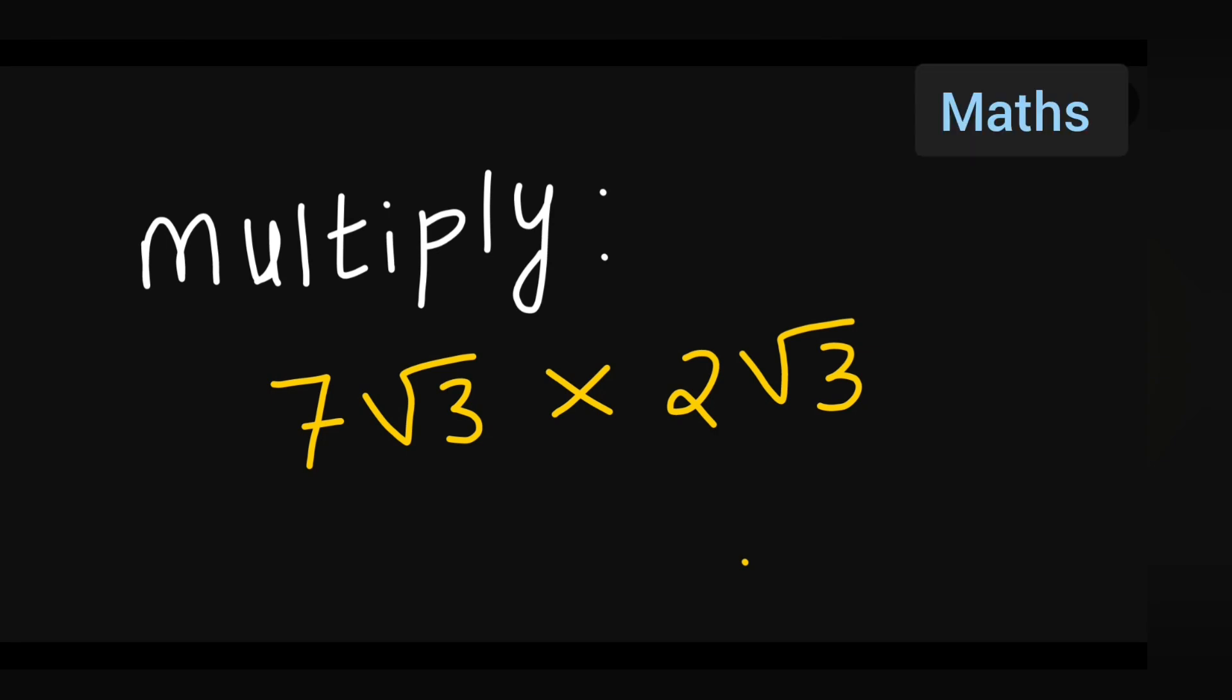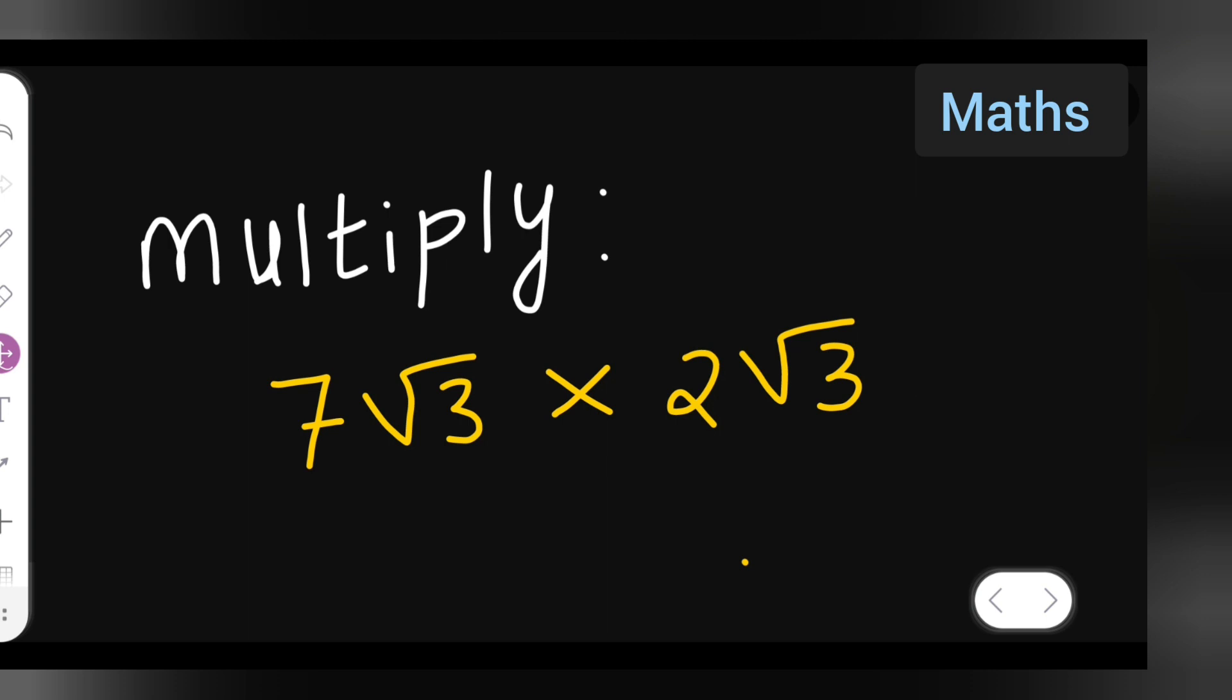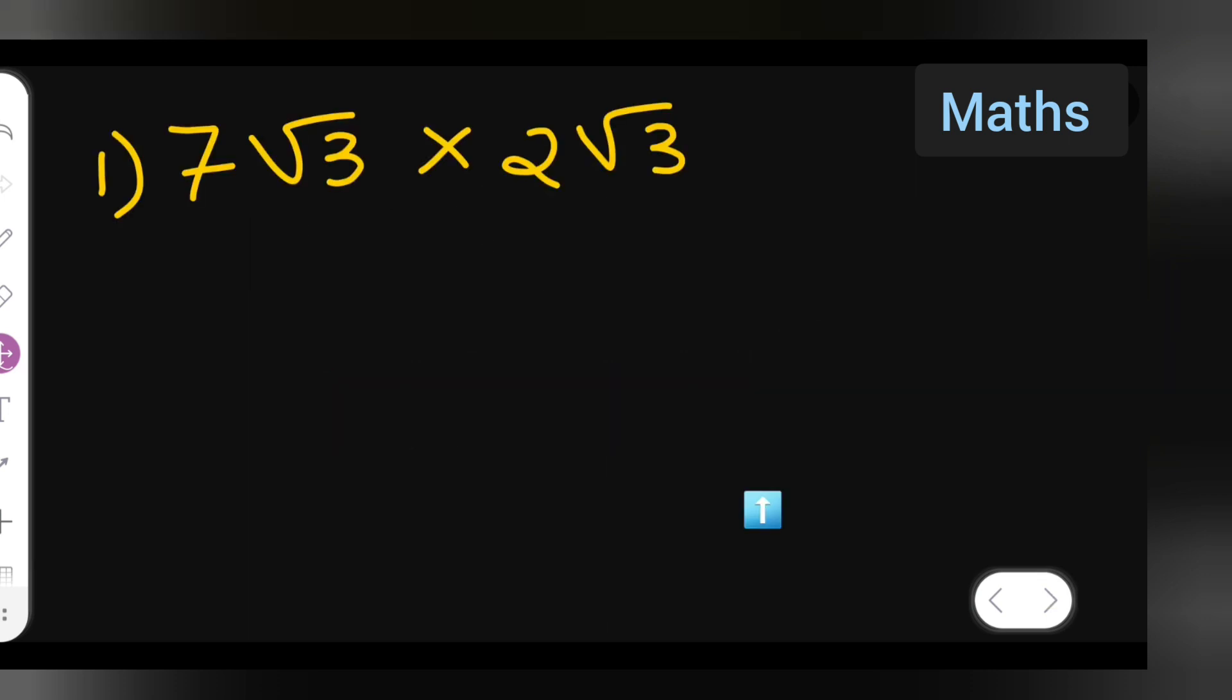Welcome to today's class of mathematics. Today's question is multiply 7 root 3 multiplied by 2 root 3. Let us see how to multiply this.